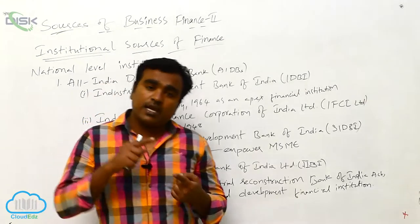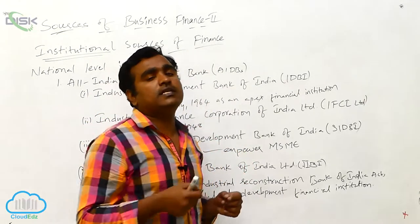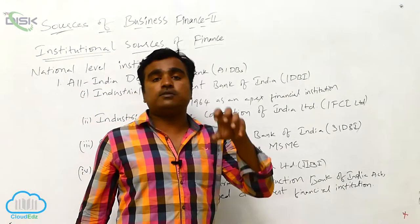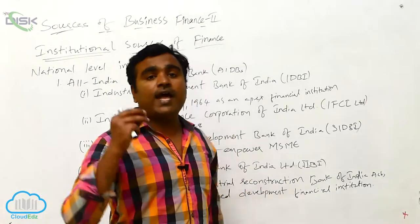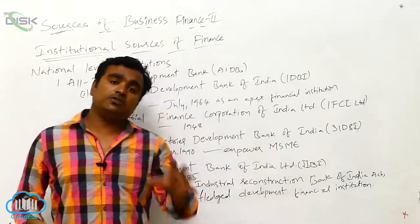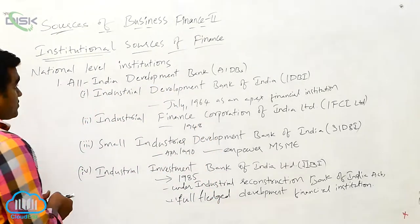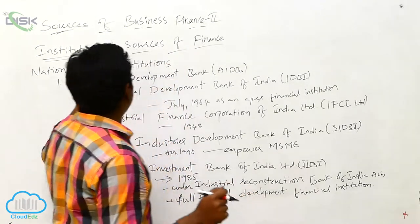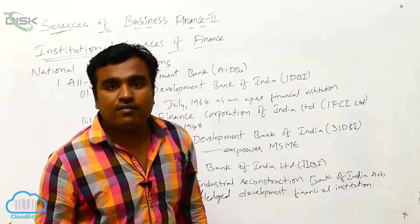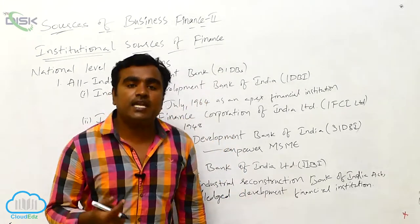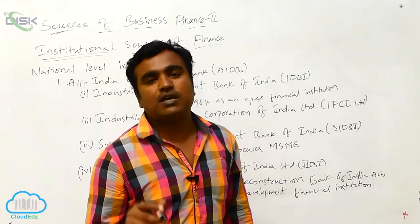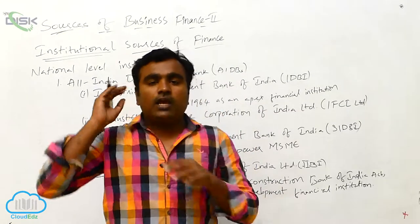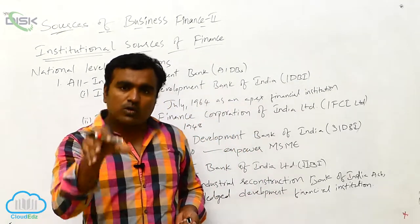They have developed different types of institutions to give adequate finance to industries. These are of two main types: national level institutions and state level institutions. National level institutions are mainly concentrated on large and medium scale industries, giving credit to large and giant medium scale industries.